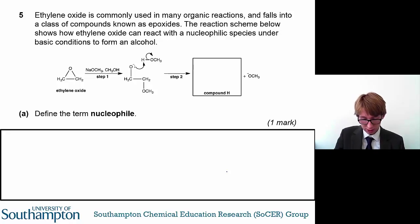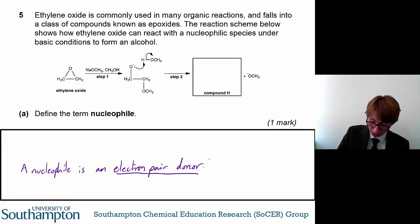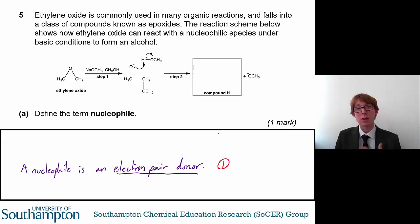So first question is to define the term nucleophile, and you get a mark for that. So what is a nucleophile? It's quite simple. A nucleophile is an electron pair donor. That's all you need to write to get that one mark. So any words to that effect, so donate a pair of electrons, is attracted to an electron deficient center, anything along those lines will get you the marks for this question.